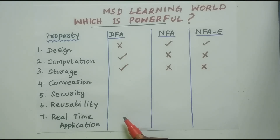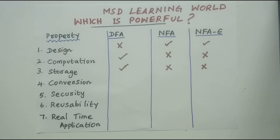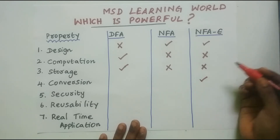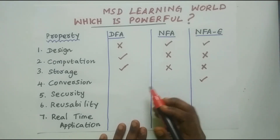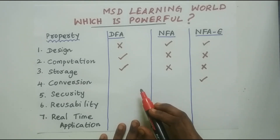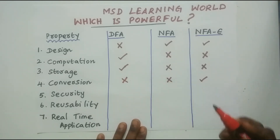DFA is more powerful in terms of storage. Now coming to property four — Conversion. When we consider conversion, NFA-epsilon is the highest-level machine while DFA is the lowest. DFA is a subset of NFA, and NFA is a subset of NFA-epsilon. If you have an NFA-epsilon machine and need any other type — NFA or DFA — you can convert from NFA-epsilon. But converting a DFA to NFA-epsilon or NFA is not possible. So for conversion, NFA-epsilon is more powerful than NFA and DFA.